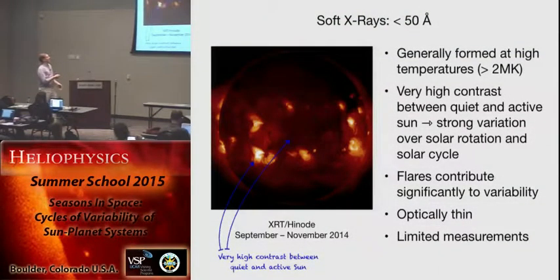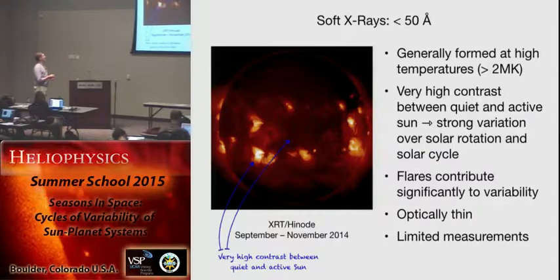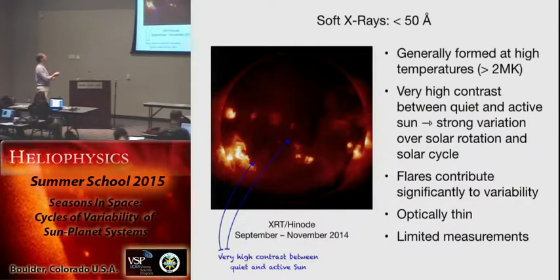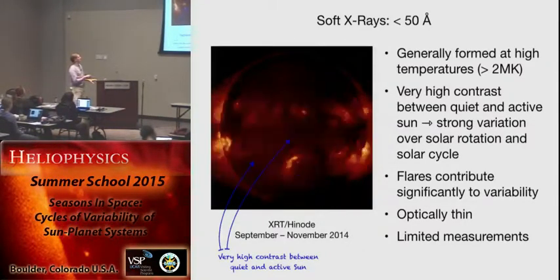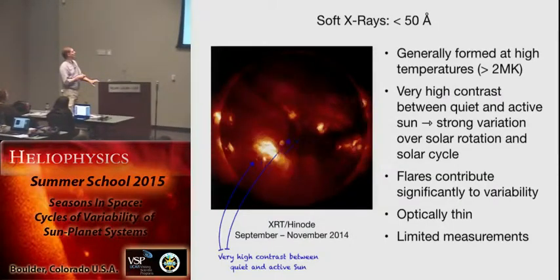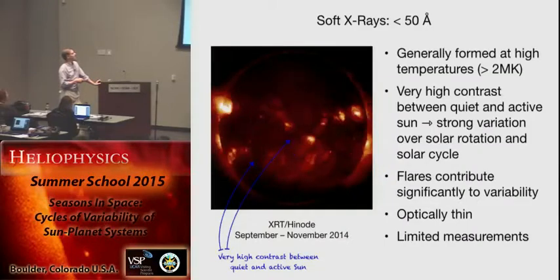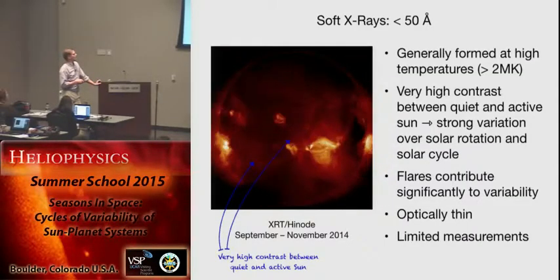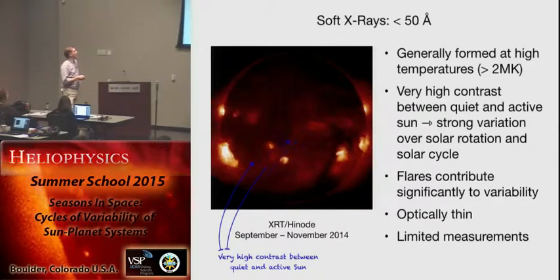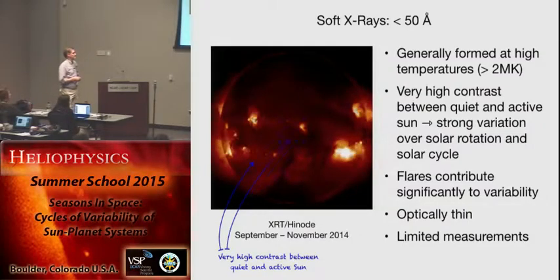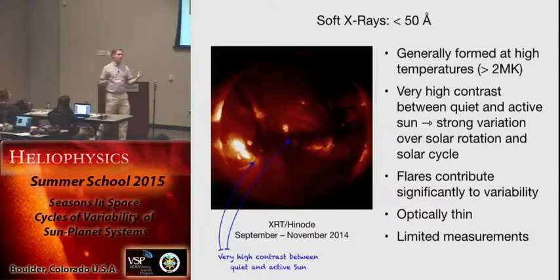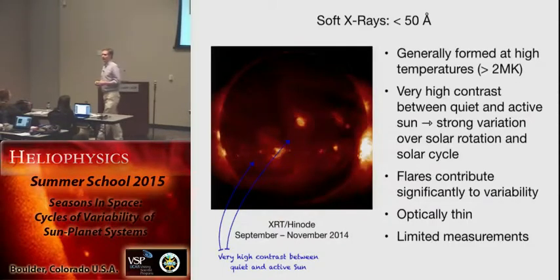Here we are in the soft X-rays — relatively short wavelengths below 50 angstroms or 5 nanometers. This emission is all formed generally at very high temperatures, and because it's formed at high temperatures, the contrast between the quiet sun and the active region is enormous — even larger than it appears here, since this is a logarithmic plot. This tremendous contrast leads to very strong modulations over the solar cycle and over a solar rotation. Because the contrast is so large, flares can contribute significantly to the variability.